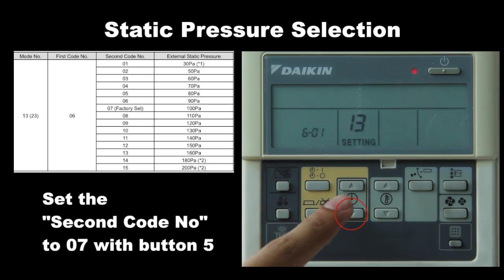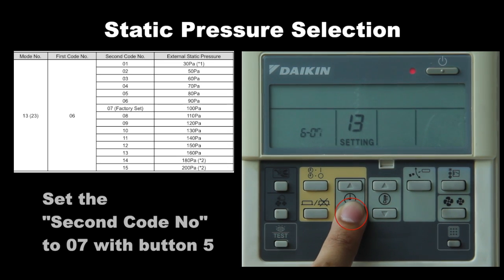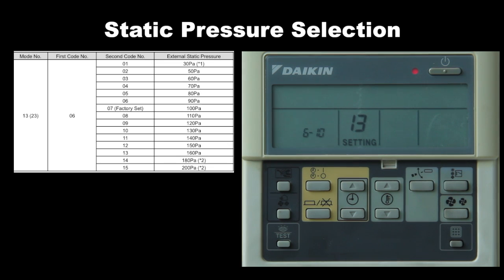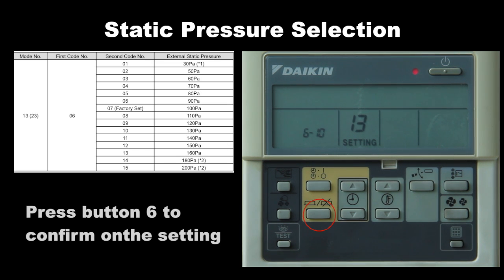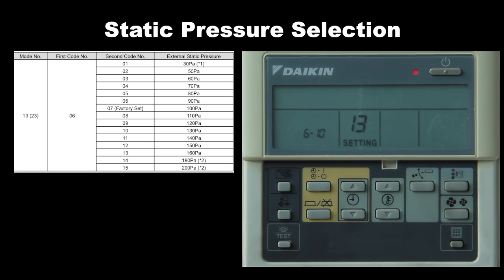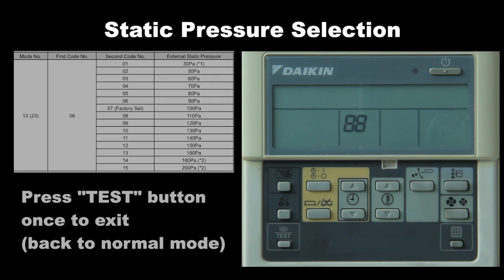Set the second code number to 07 with button 5. Press button 6 to confirm the setting. Press the test button once to exit back to normal mode.